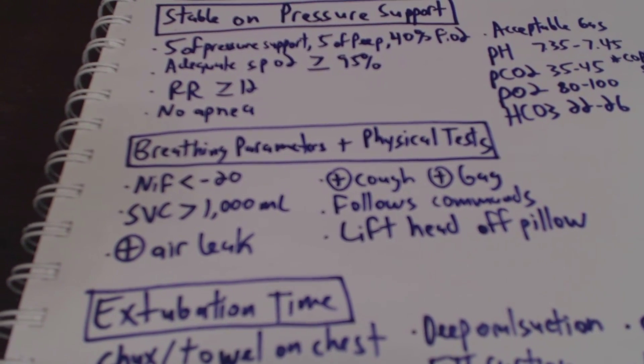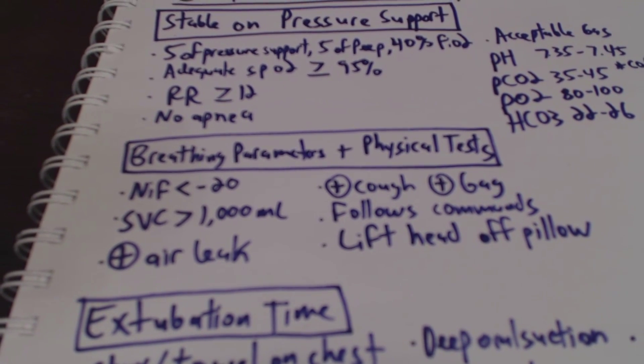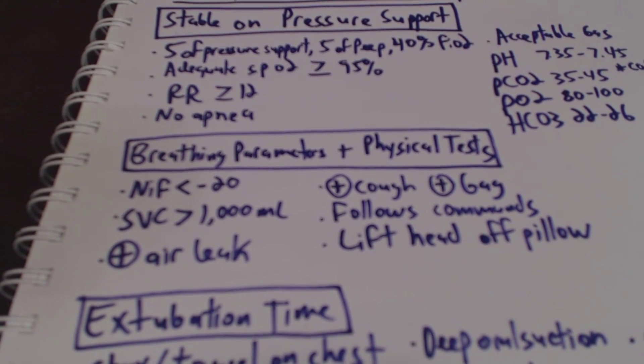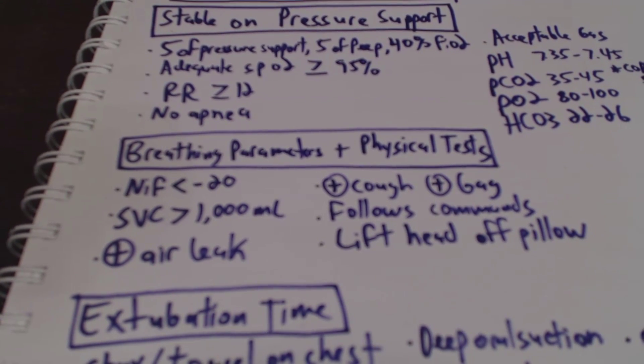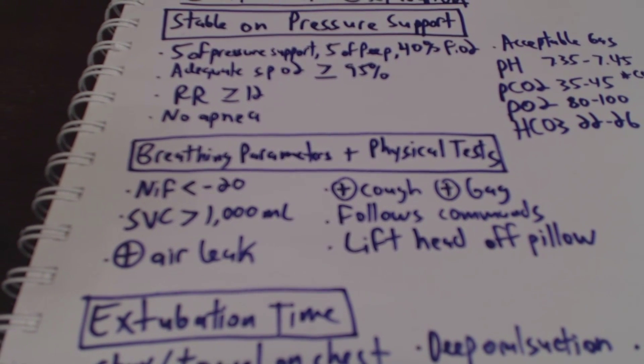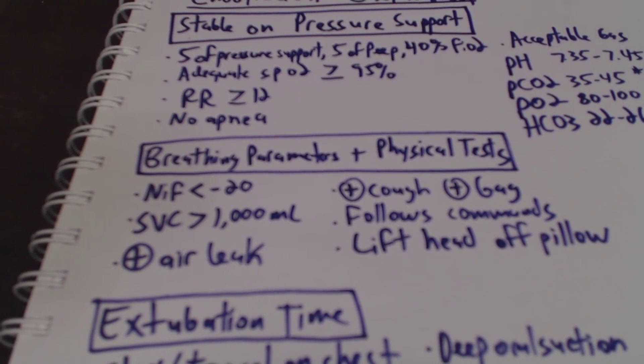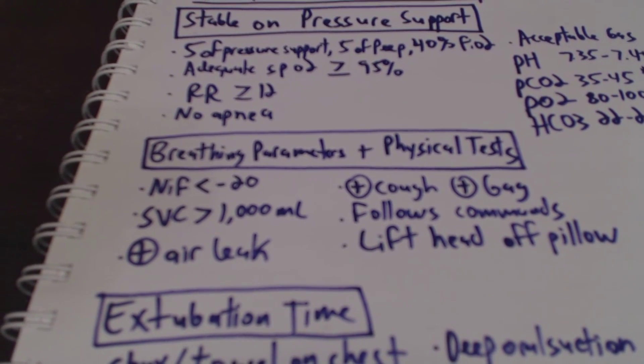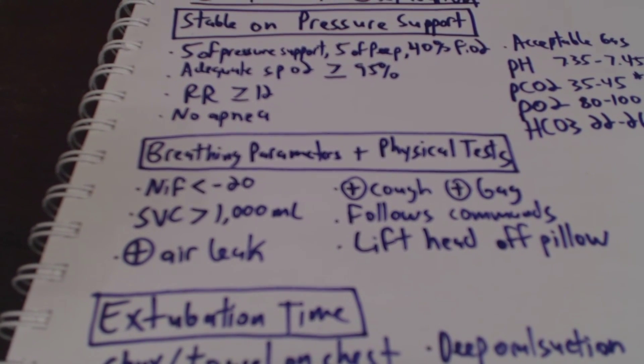We're going to do the breathing parameters and physical tests. So NIF of less than negative 20. I had a patient recently who had a NIF of negative 44, and once again, we want the slow vital capacity of greater than 1,000. And his was like 5,400. So NIF of negative 44 and SVC of 5,400. This is the most I've ever seen, and that's easily double of the parameters that we usually want. He was like a Taekwondo instructor and did a lot of breathing exercise. So that totally makes sense.